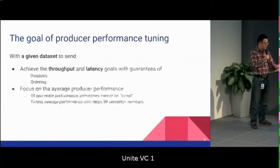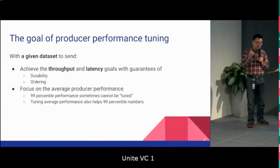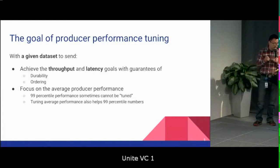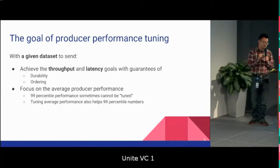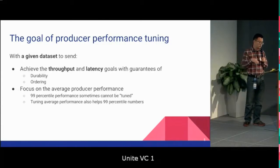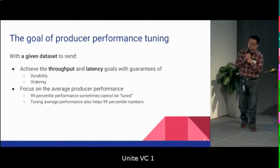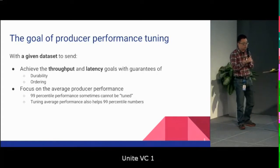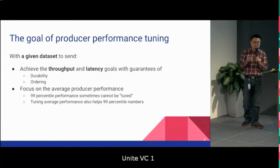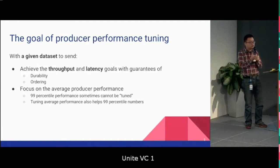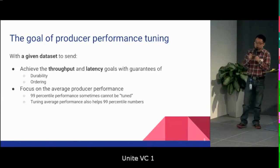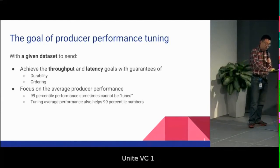Let's look at the goal of producer performance tuning. With a given data set — meaning a certain data pattern — we want to achieve throughput and latency goals with guarantees of durability and ordering. For today's talk I'm going to focus on average producer performance for two reasons: first, the 99th-percentile performance sometimes cannot be tuned — for example, if you have a broker bounce, your producer performance will be impacted at the 99th percentile, and you cannot tune that. Second, tuning average performance also helps the 99th-percentile numbers, so the basic principles are the same.